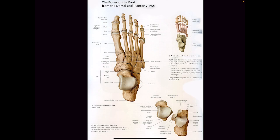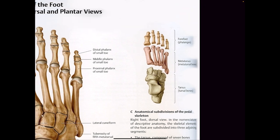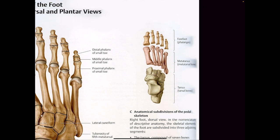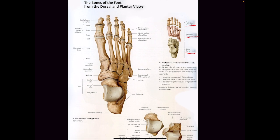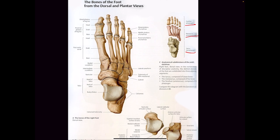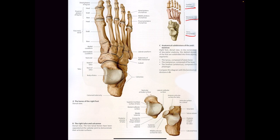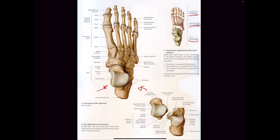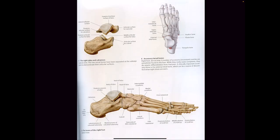Last but not least, we talk about the foot. The foot is broken into three major sections: the phalanges, the metatarsals, and the tarsal bones. Usually everyone starts with the tarsals because they're the biggest. The foot is a pretty amazing structure — it has this big bone called the calcaneus, and the talus sits on top of it. I like to think of them like a hammer.